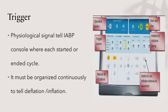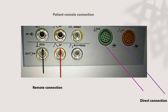The trigger is the physiological signal to the intra-aortic balloon console indicating when to start or end the cycle. It must operate continuously to control inflation and deflation of the balloon. Looking at the console, we can see the source of trigger and the patient console connection — how we connect to the trigger.